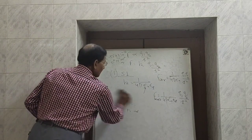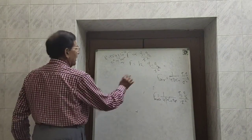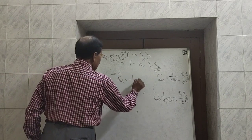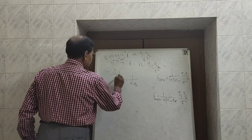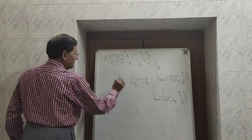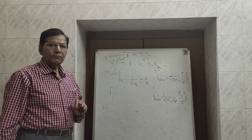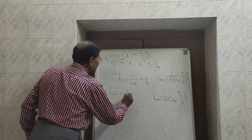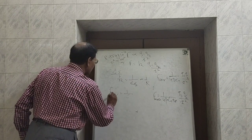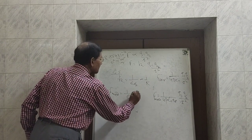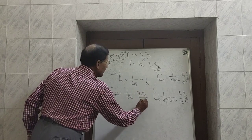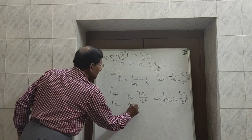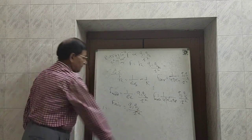In the CGS system, the value of small k is 1 over epsilon-r, or 1 over capital K. Therefore, in the CGS system, the formula for the force becomes: F-medium equals 1 over epsilon-r times q1 q2 divided by r squared. And F-air equals q1 q2 divided by r squared, because for air epsilon-r equals 1.